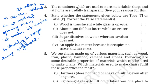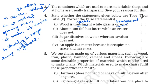Number four: state whether the statements are true or false. First statement — wood is translucent, glass is opaque. Wood is opaque; you cannot see through wood. Glass is transparent; you can see through glass if it is not frosty glass. So the first statement is false.